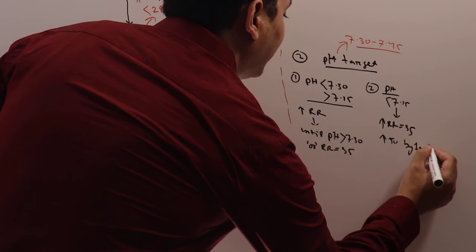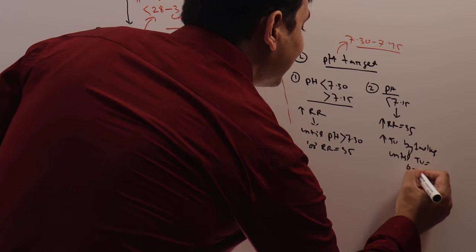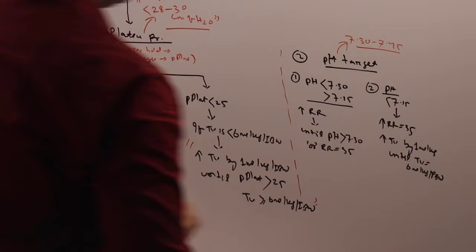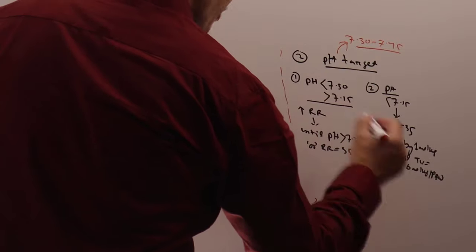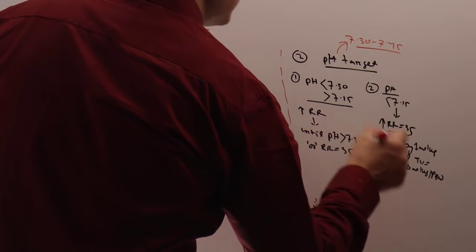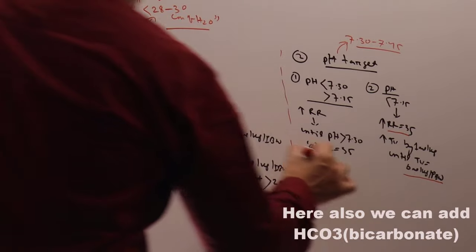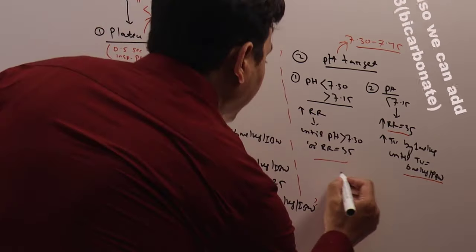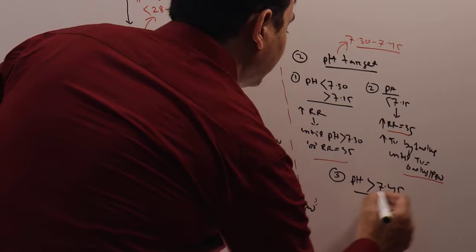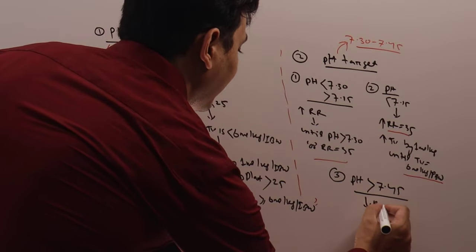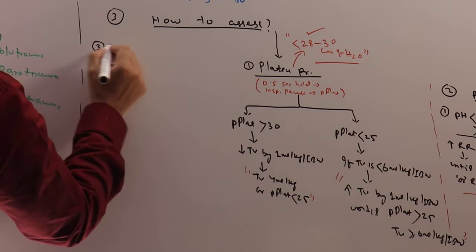Second: if pH is less than 7.15, the patient is severely acidotic — obviously increase the respiratory rate to 35, but additionally also increase the tidal volume by 1 ml per kg until the tidal volume is 6 ml per kg of predicted body weight. Third: if pH is more than 7.45, simply decrease the respiratory rate.